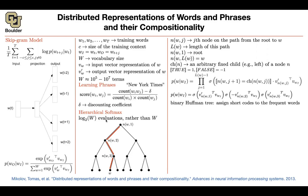When studying the computational cost of an algorithm, you can look at the worst case, best case, and average case scenarios. The average case is actually better than log₂ with binary Huffman trees. The words are all at the leaves — the intermediate nodes just help you decide left or right. You are not putting any words on the nodes, only at the leaves.